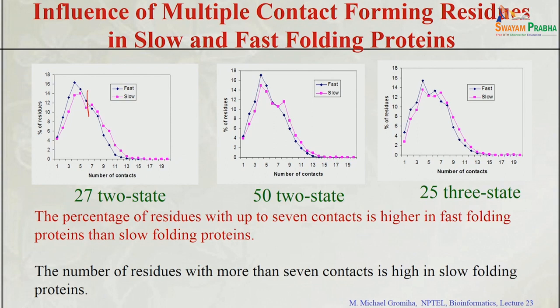These analyses were done completely using 3D structures. Now, is it possible to get this information from the sequence? We obtain topological parameters — contact order, long-range order, multiple contact index — all requiring a structure. It also depends on the protein type: alpha, beta, or mixed class. Can we predict or relate sequence-based parameters with folding rates?